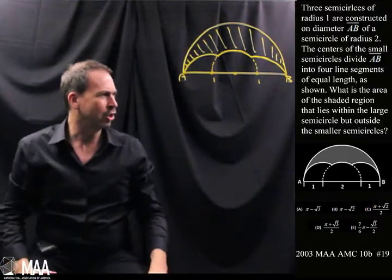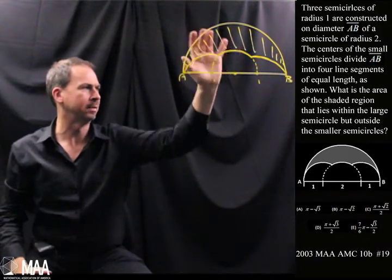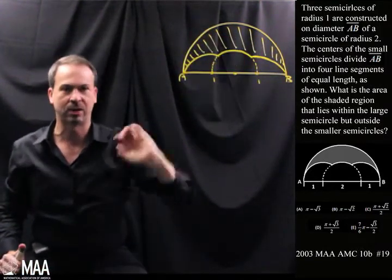What is the area of the shaded region that's between the large semicircle and outside these smaller semicircles? Okay, the shaded stuff. What's the area of the shaded stuff?